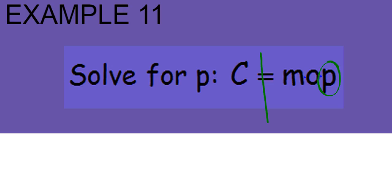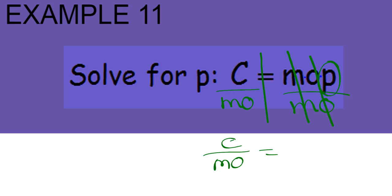So we are going to divide on both sides. That cancels M and O, and we're left with C divided by MO equals P. You know you're done when you've isolated the variable they asked.